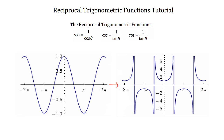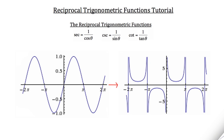Now let's take a look at a cosecant curve. Remember, cosecant is the reciprocal of sine. On the left I've drawn the regular sine function — the parent function y equals sine theta. For every one cycle, we cover a horizontal distance of 2 pi. However, on the cosecant graph on the right, each parabola still only covers a period of pi units.